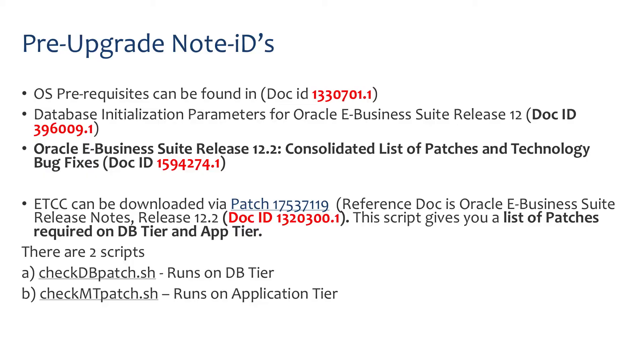My first set of tips is how to prepare for the upgrade. There are a few checks you need to do: operating system patches, database level checks, and underscore parameters. You want to make sure you do that right. There is a utility called ETCC — you can go to the Oracle website, download ETCC, and run that against your database. That way you can get a list of patches and you don't have to go through the whole documentation looking for what patches you need to apply.